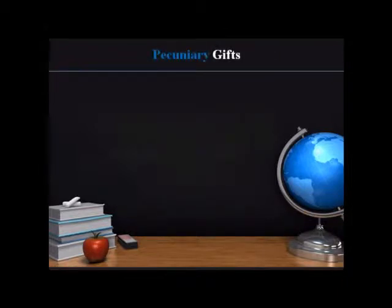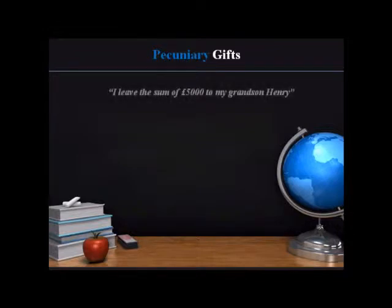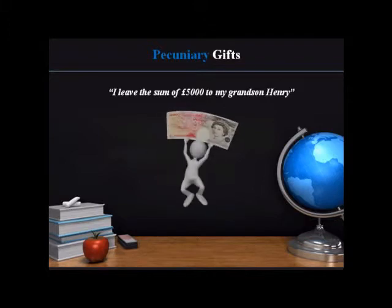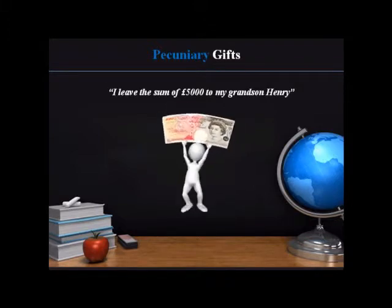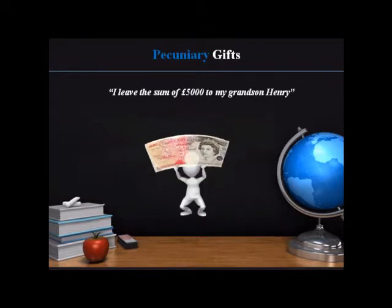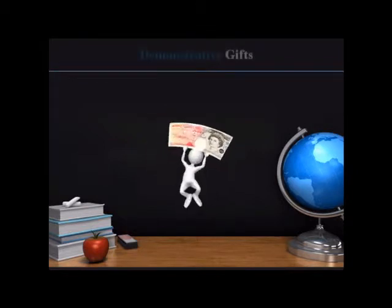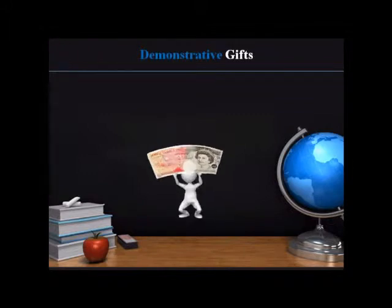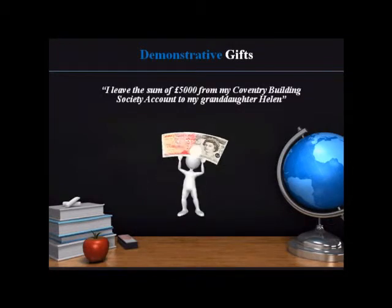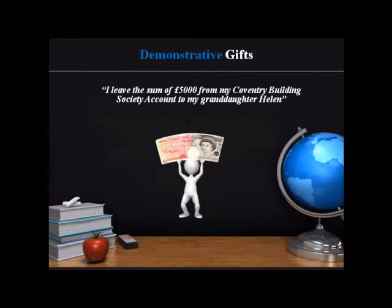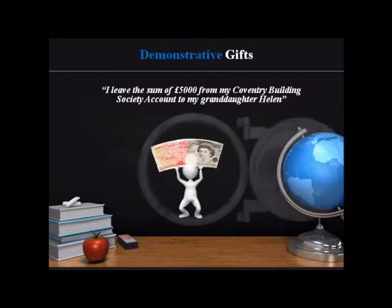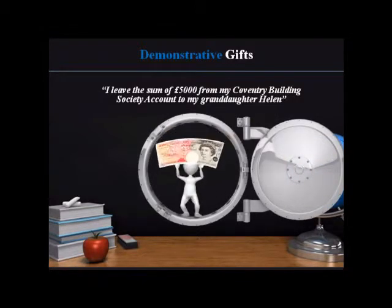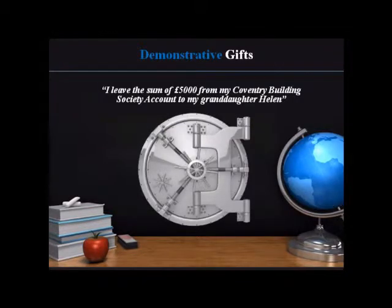Pecuniary gifts refer to a specific gift of money to a named person. For example, I leave the sum of £5,000 to my grandson Henry. Unlike a demonstrative gift, it will not specify where the sums are to be taken from. An example of a demonstrative gift is I leave the sum of £5,000 from my Coventry Building Society account to my granddaughter Helen. The difference between a pecuniary and demonstrative gift is that one identifies the specific fund from which the legacy must be taken and the other does not.